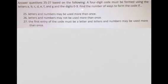In questions 25 through 27 we want to create a four digit code using the letters A, B, C, D, E, F, and G and the digits 0 through 9. So we want to find the number of ways to form the code if we're allowed to use letters and numbers more than once.